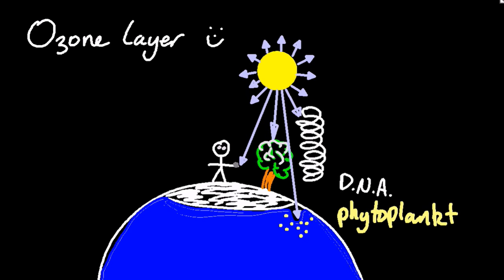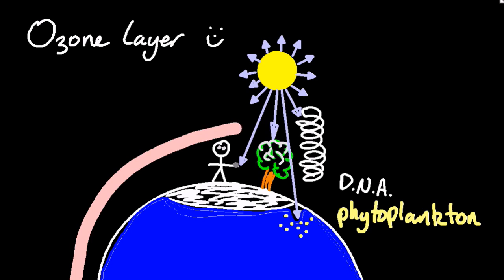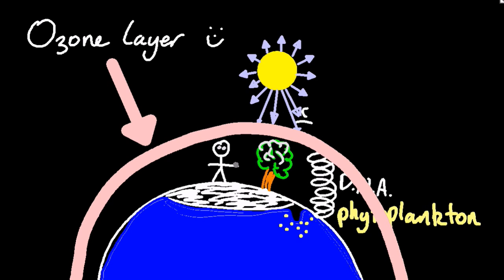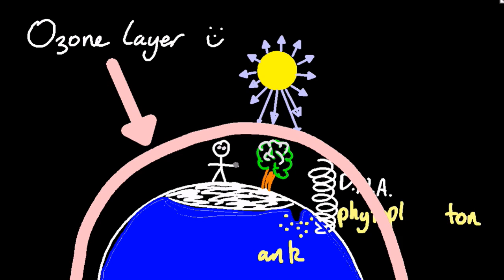Obviously the closer to the surface of the ocean, the more damage they'll sustain. But having an ozone layer offers us protection from this harmful ultraviolet radiation. Now a little ultraviolet radiation does get through, but we are protected, as are the phytoplankton, the plants, and anything with DNA.